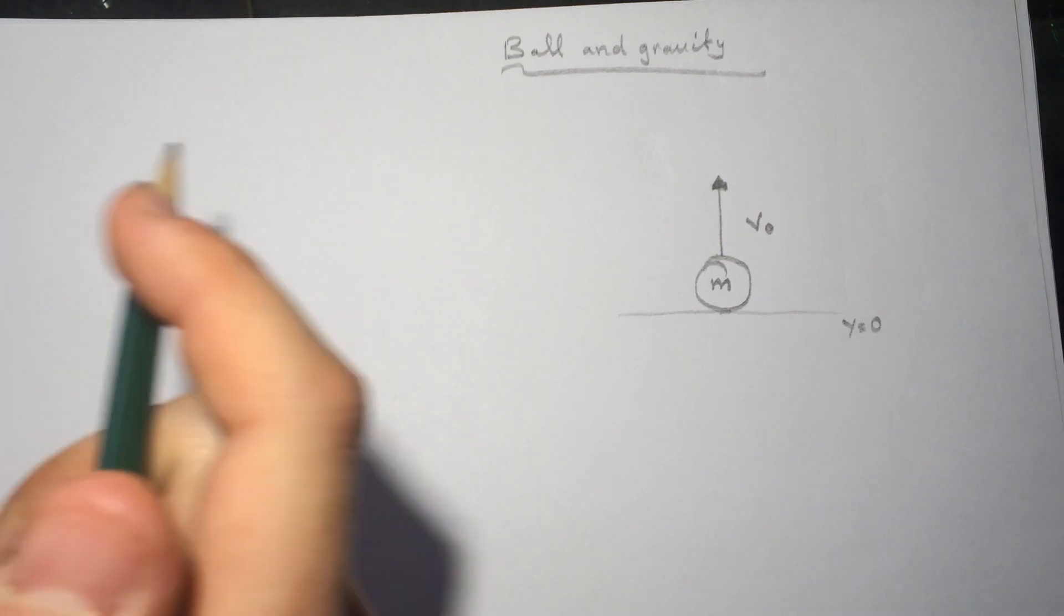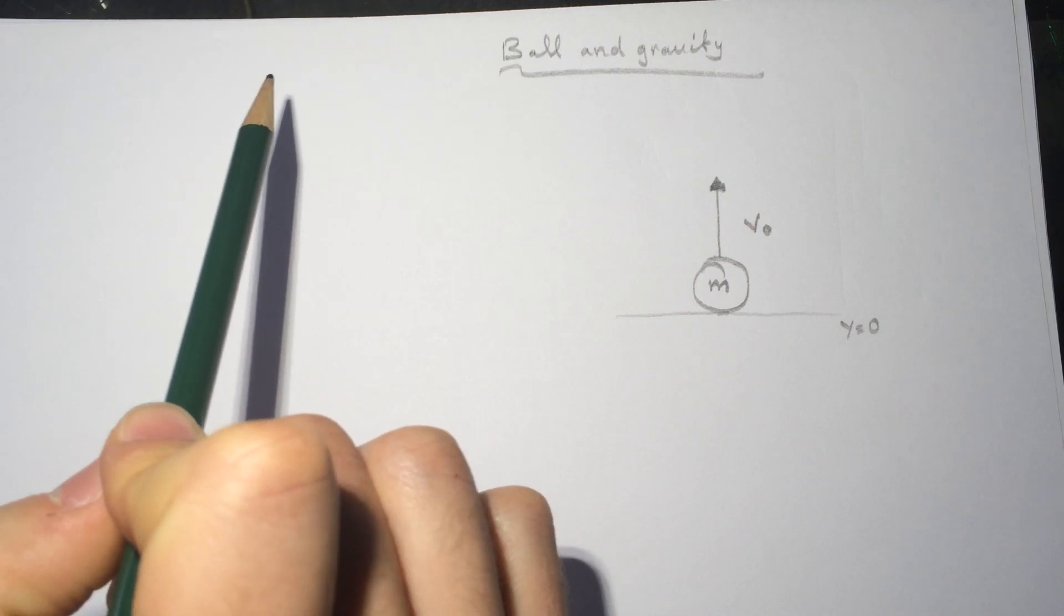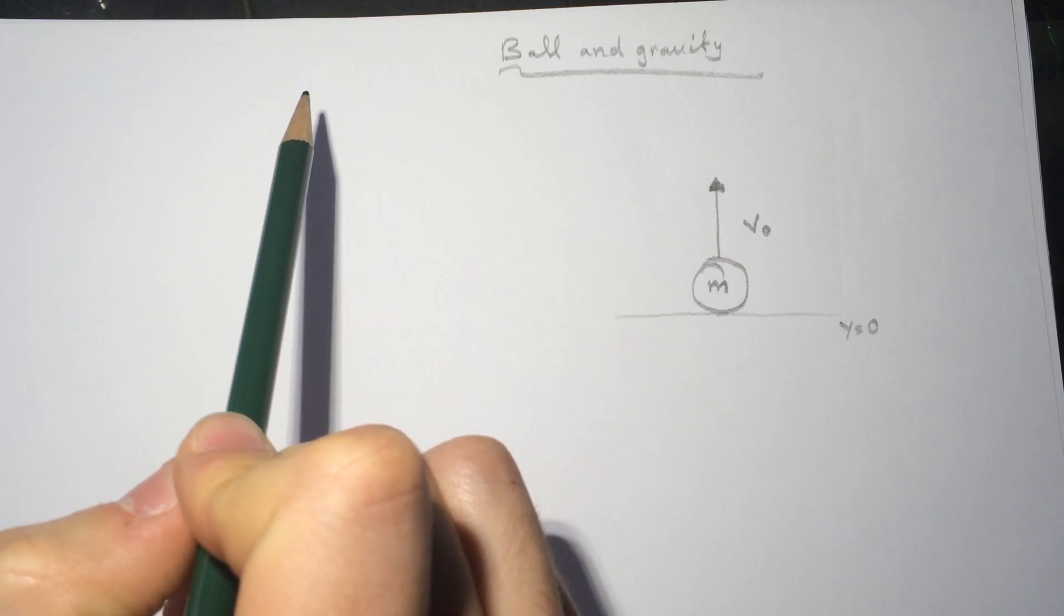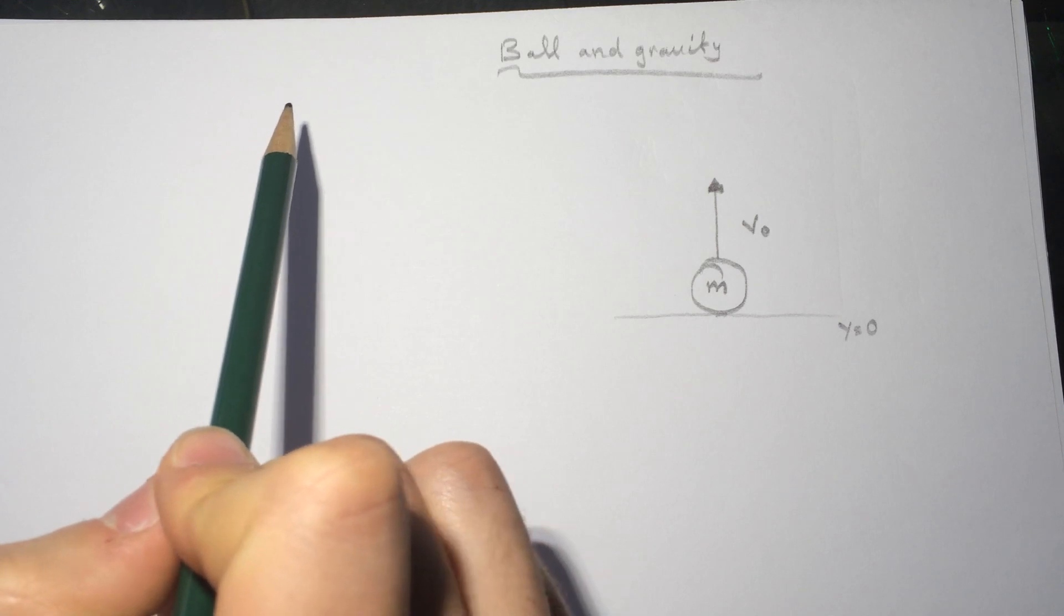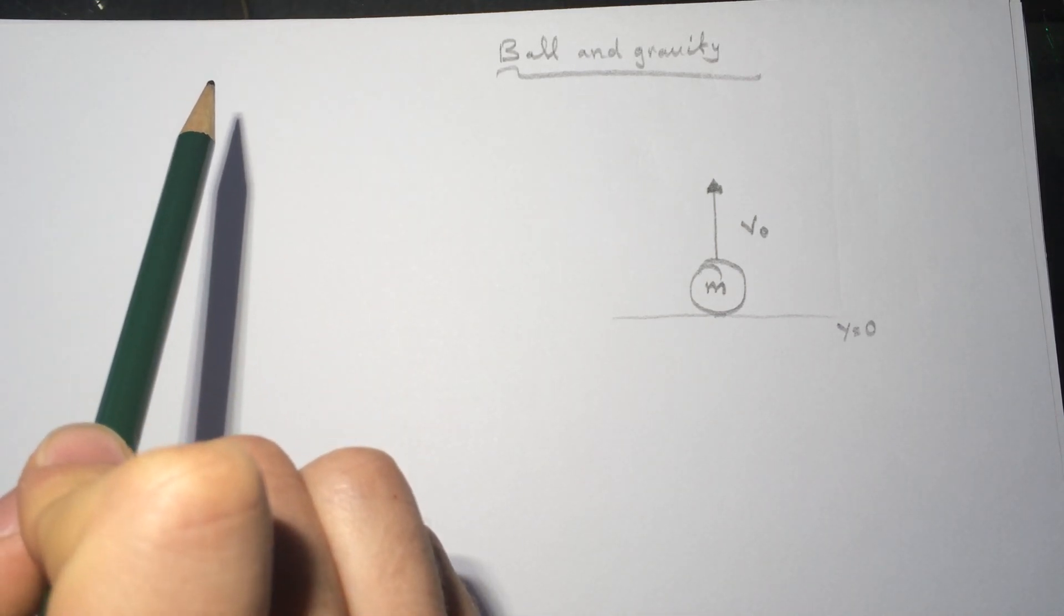Hi guys, this is a smart physics problem about ball and gravity. The question is asking: a ball of mass 6 kilograms is thrown straight up in the Earth's gravitational field with an initial